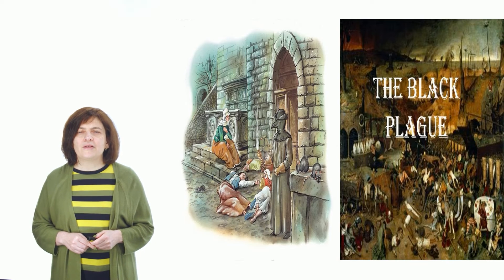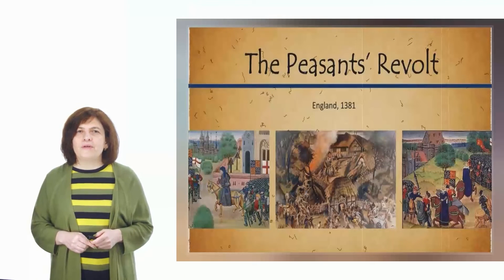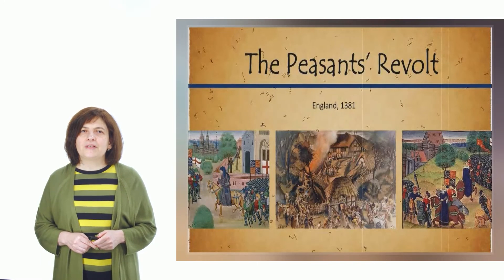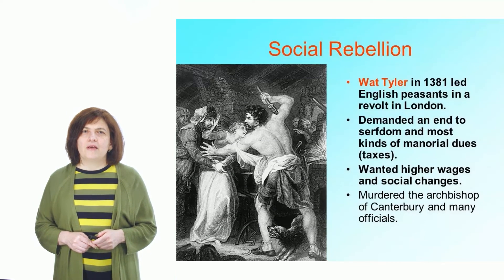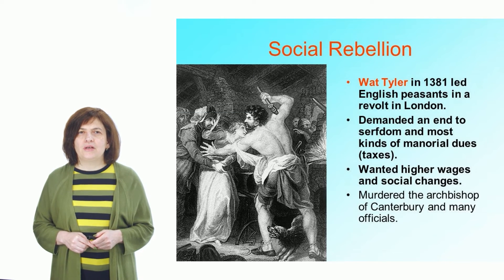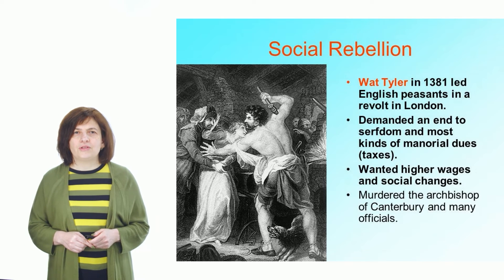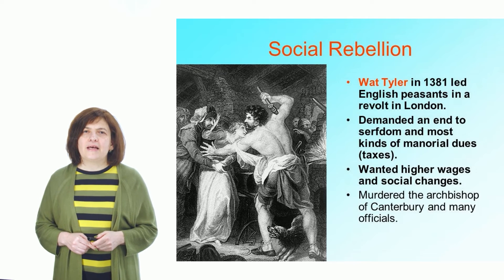Nothing made the people so angry as the rich foreign bishops of the Catholic Church who didn't think about the sufferings of the people. The protest against the Catholic Church and the growth of national feeling during the first years of the Hundred Years' War found an echo in literature. There appeared poor priests who wandered from one village to another and talked to the people. They protested against the rich bishops and also against all churchmen who were ignorant and didn't want to teach the people anything. Such poor priests were the poet William Langland and John Wycliffe.